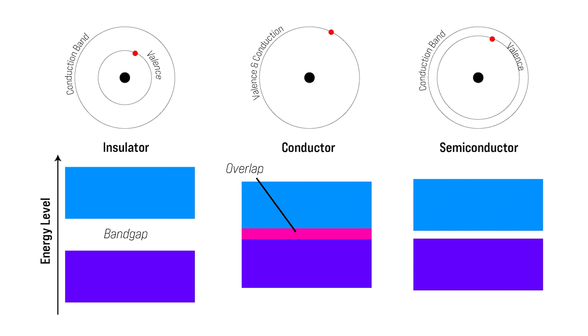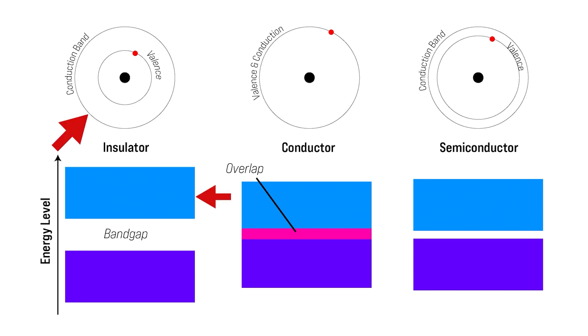Before we jump into the typical PN junction explanation of a diode, it helps to understand the difference between conductors, insulators, and semiconductors. If you look at a simplified atomic model of an insulator, there exists a valence orbit or shell where electrons are buzzing around the atom. There also exists a conduction band way out here. If we impart some energy to an electron, we can try to push it into a higher orbit where it can migrate to an adjacent atom — this area is called the conduction band. For an insulator, it takes a very large amount of energy to cause this to happen, which is why insulators are used as rubber coatings on wires, protective gloves, and ceramic and glass in high voltage electronics.